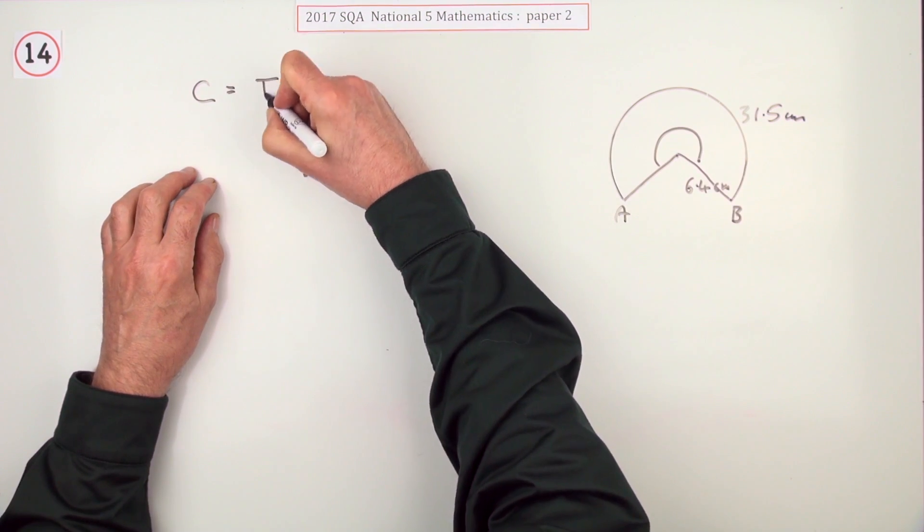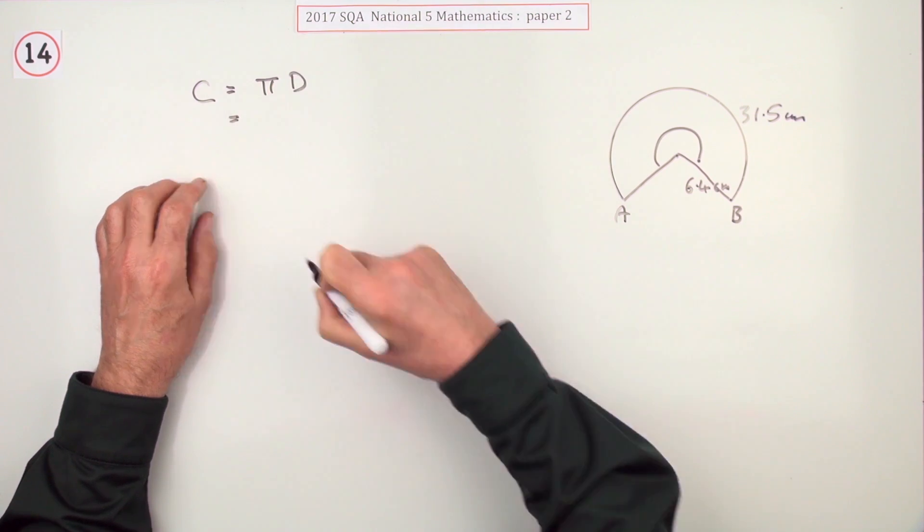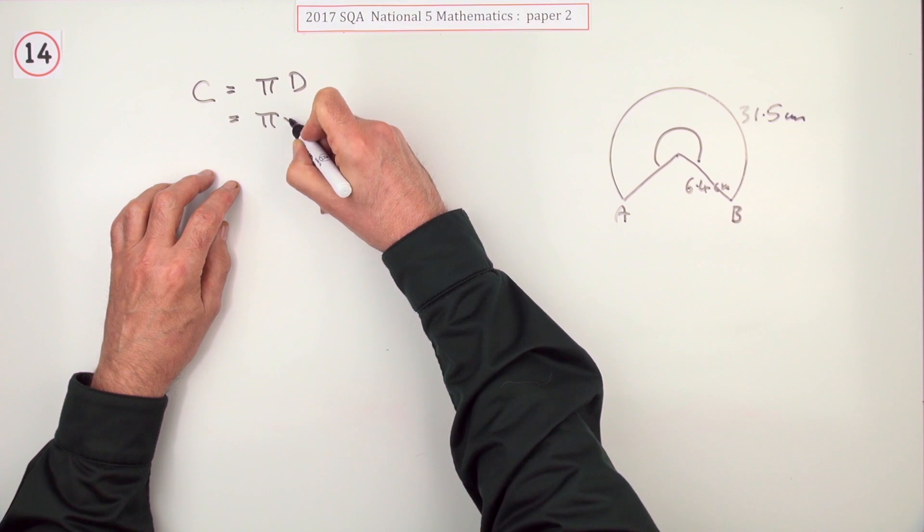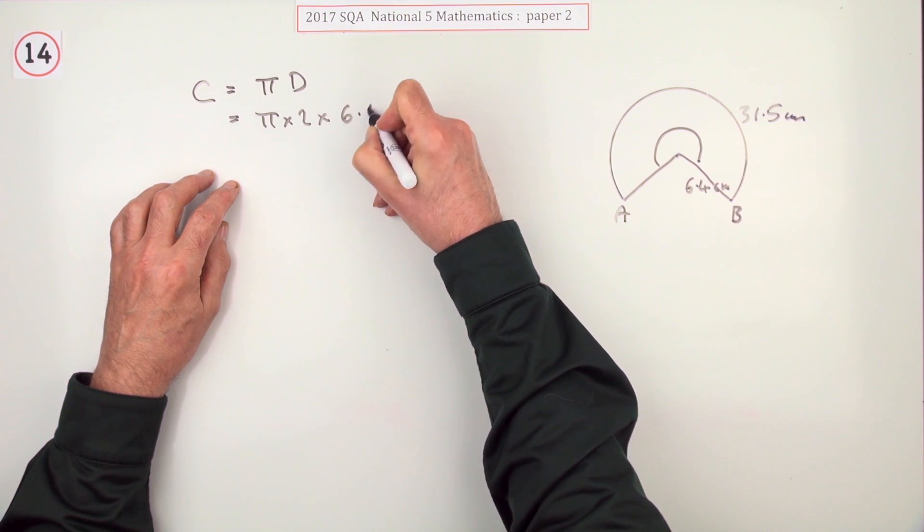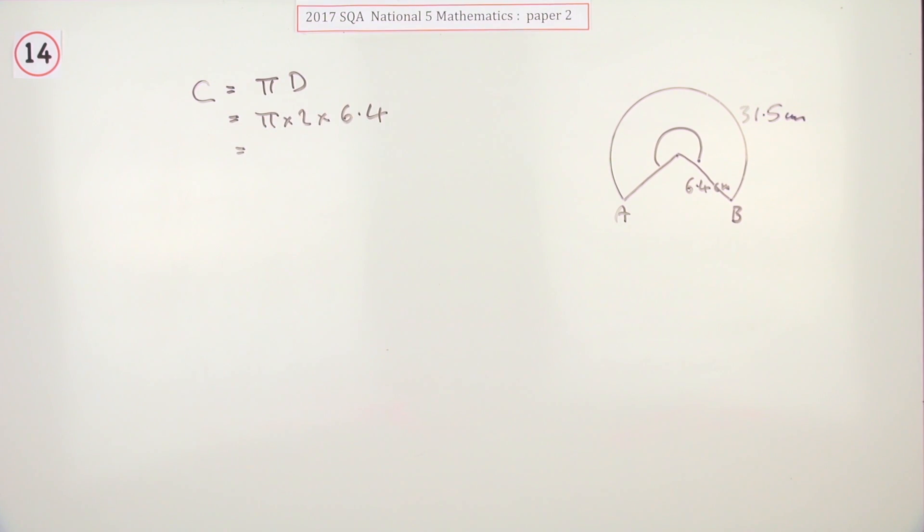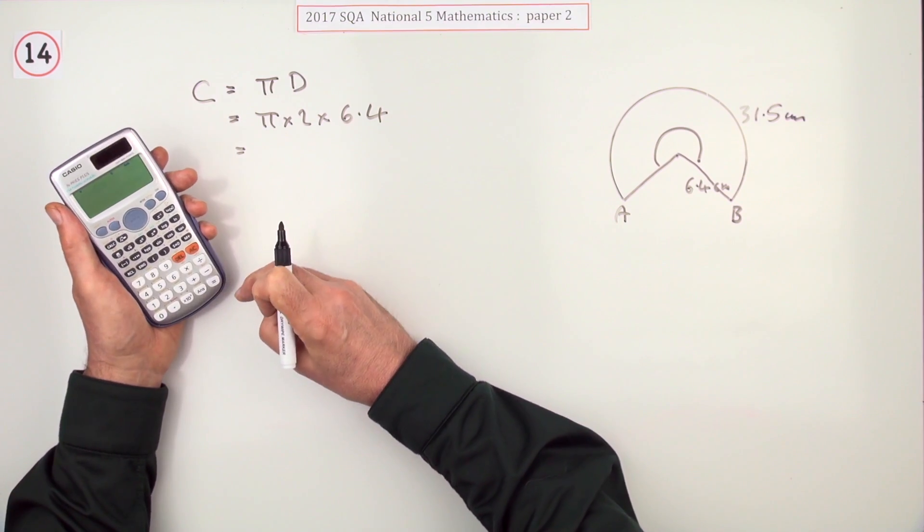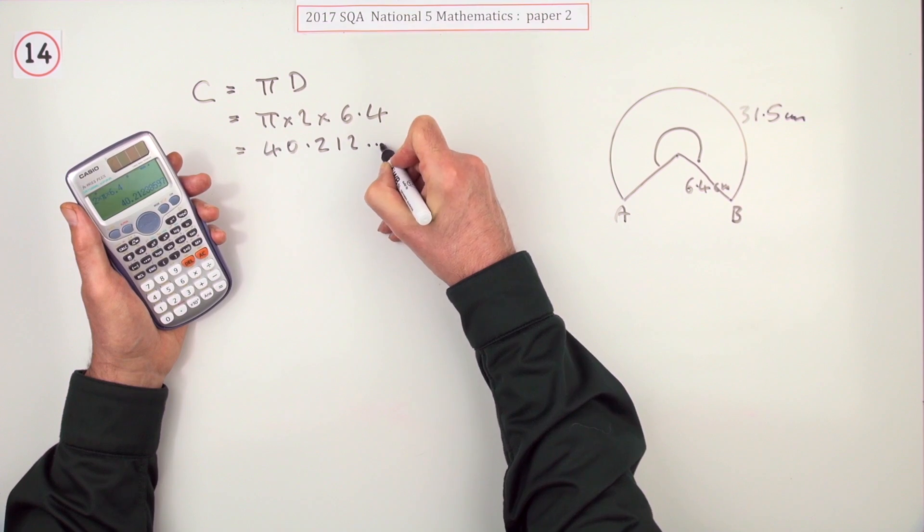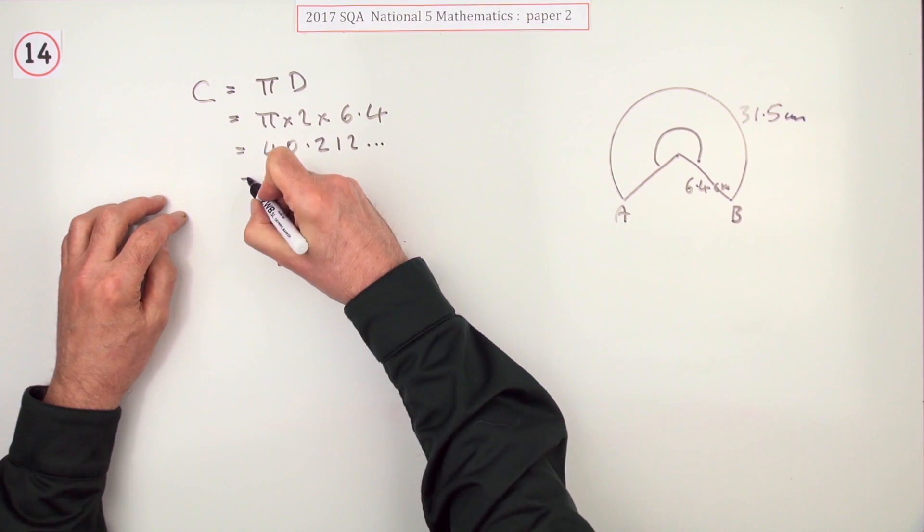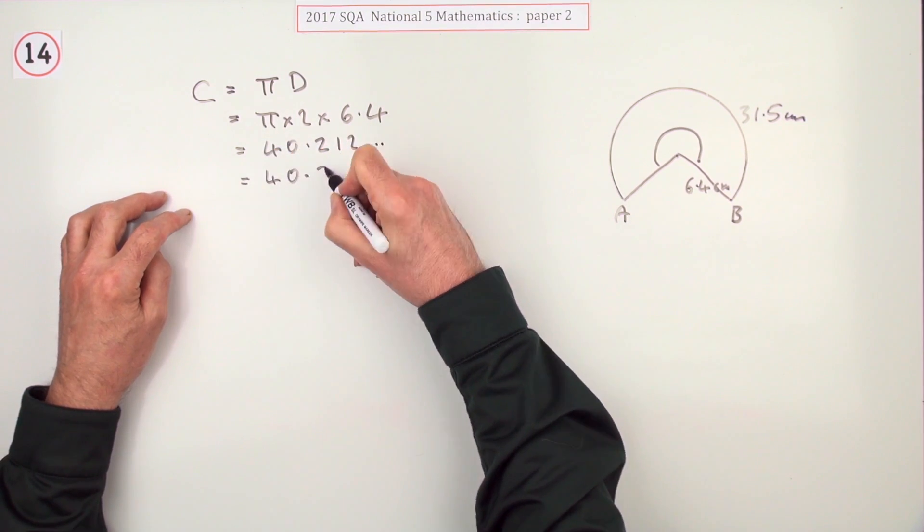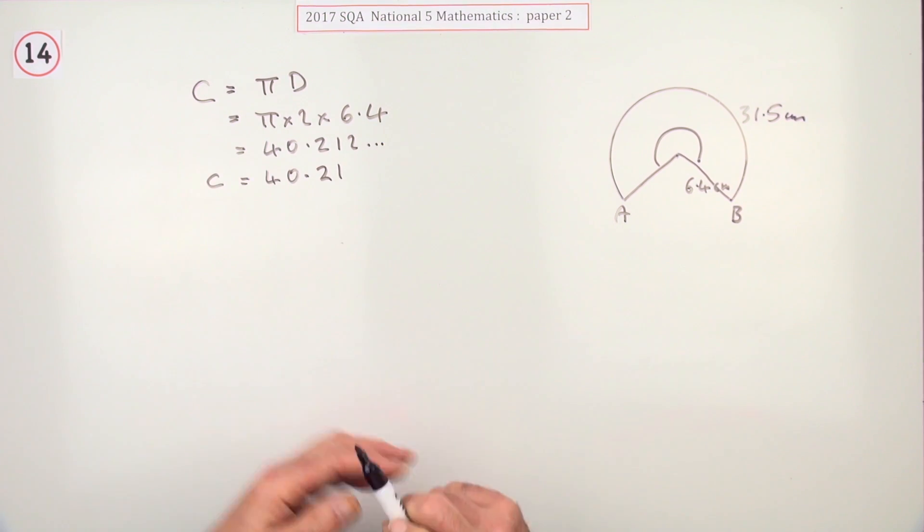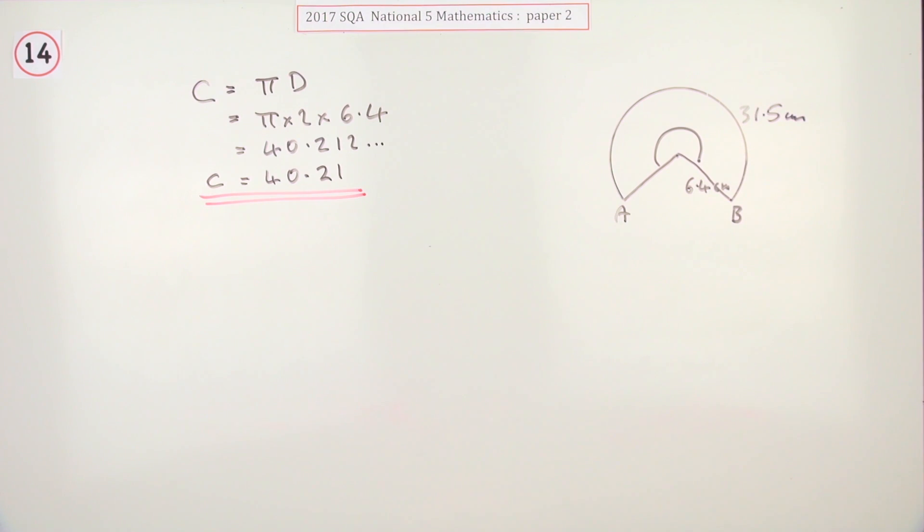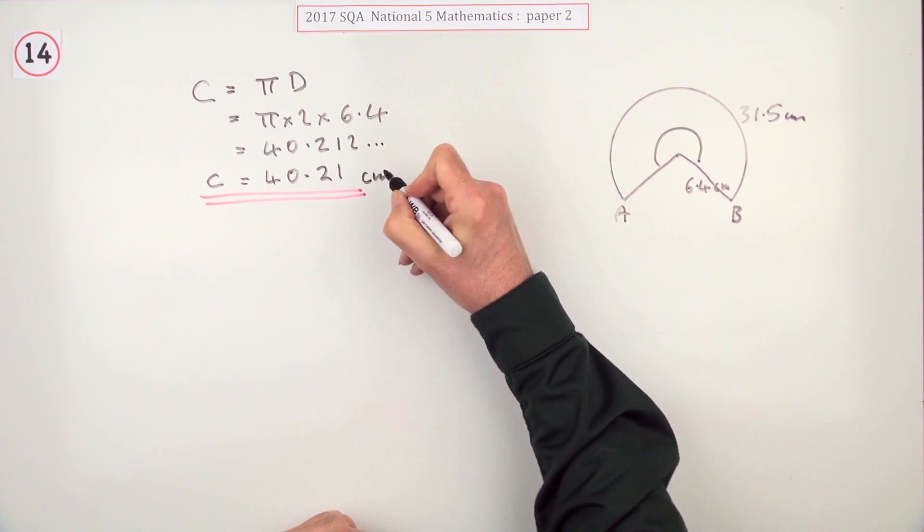So the first thing to do is work out the circumference. You can either say πd or 2πr. 2πr makes more sense because it's radius that you know. So I'll just put π times 2 times 6.4 and press the button. You get 40.212 and so on. I'll just round it off to 40.21.